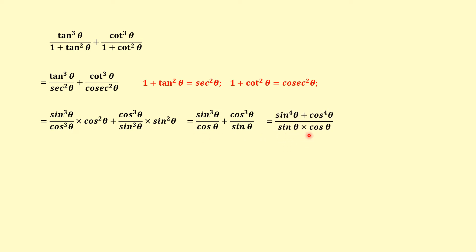If we divide sin³θ by cosθ, we get sin⁴θ in the numerator. If we divide cos³θ by sinθ, we get cos⁴θ. Then we find that sin⁴θ is (sin²θ)² and cos⁴θ is (cos²θ)². The denominator is sinθ · cosθ, which is the same for both terms.